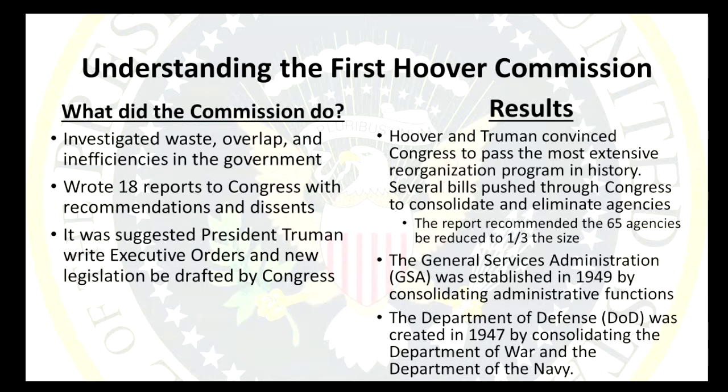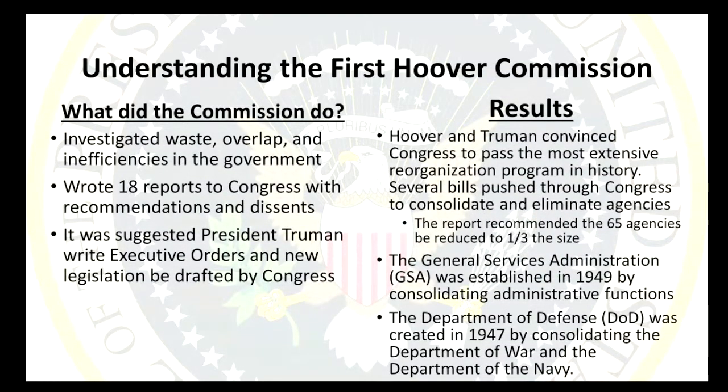It was suggested that President Truman draft executive orders and that legislation be drafted by Congress. Hoover thought they could accomplish half of the recommendations through the legislature and half through executive orders. Hoover and Truman convinced Congress to pass the most extensive reorganization program in history — they completely rewrote the duties and responsibilities of the executive branch. They did it in a bipartisan commission with Congress and the executive branch together. The report recommended that of 65 agencies, only a third — about 30% — were needed. That's a huge reduction in the size of government.